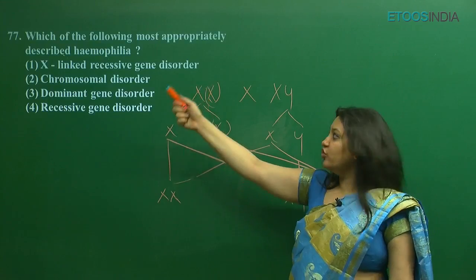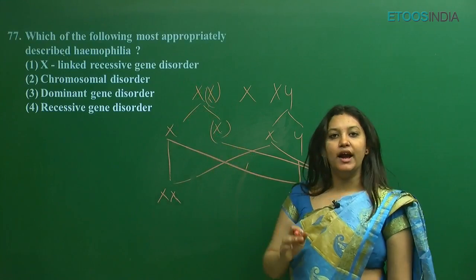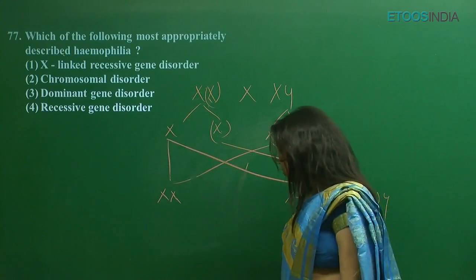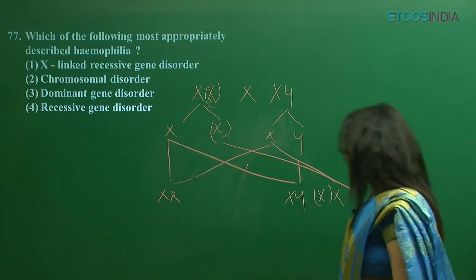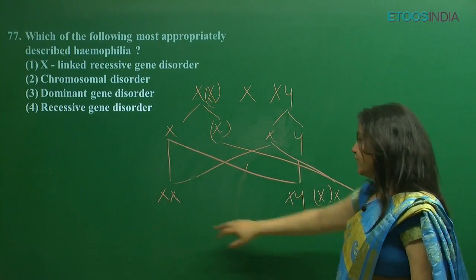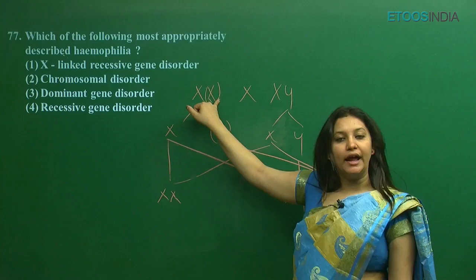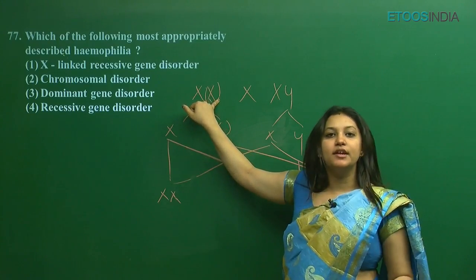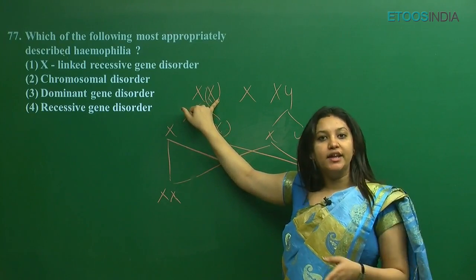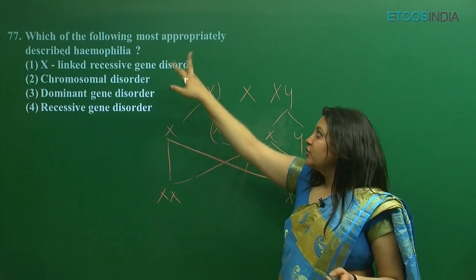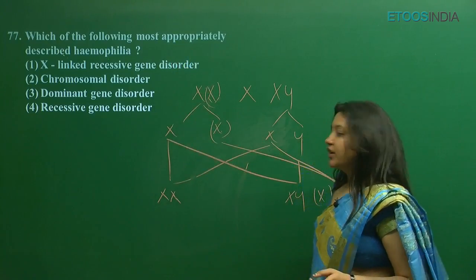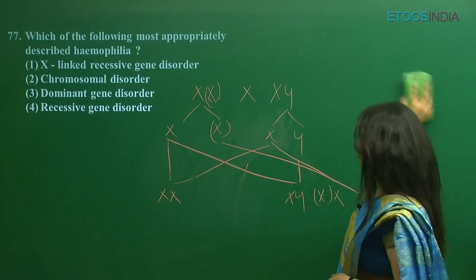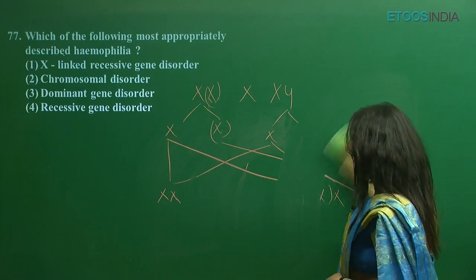X-linked — that is why haemophilia is an X-linked recessive disorder. Because it is located on only one X chromosome, carrier females do not show the symptoms of the disease inside them. They are the carrier females. What is haemophilia? Haemophilia is an X-linked recessive genetic disorder.